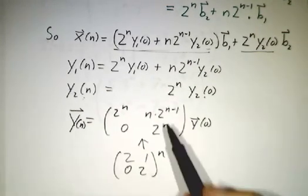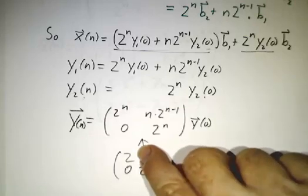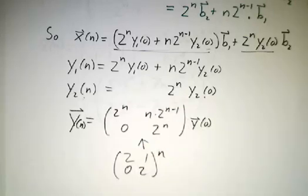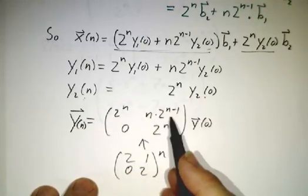So it's not as simple as taking the nth power of a diagonal matrix, but it's not so bad. In addition to exponential terms, you get an n times exponential term.